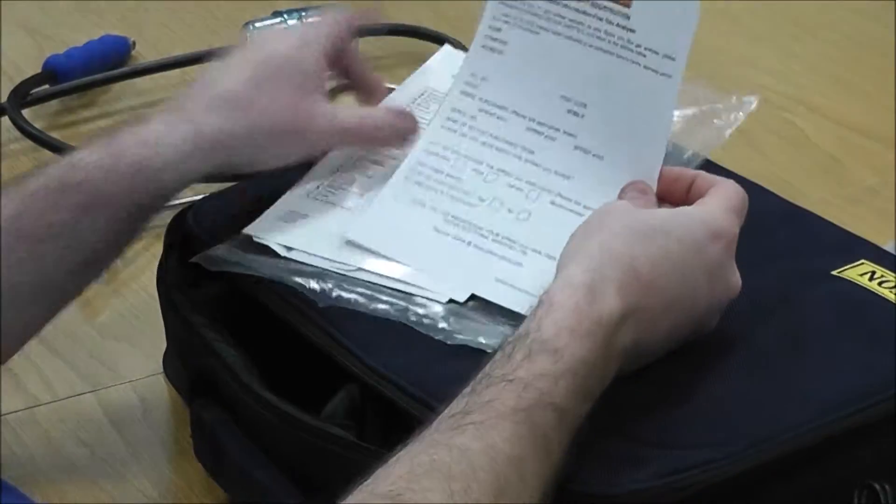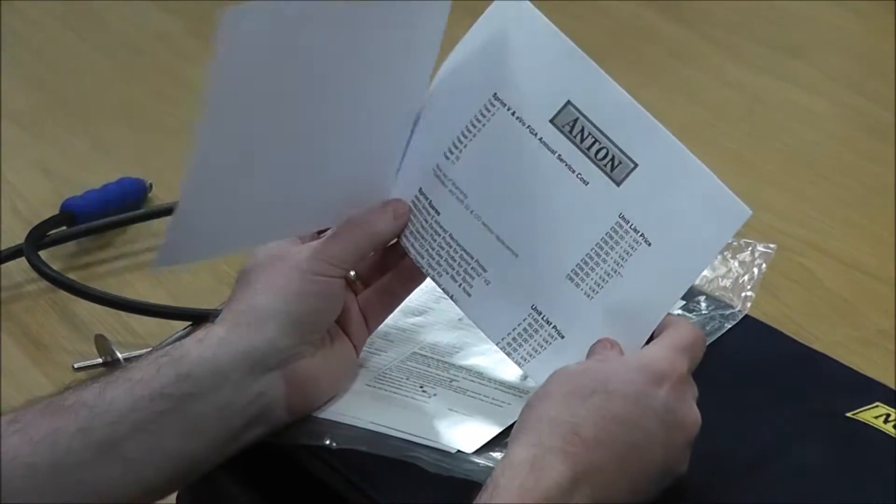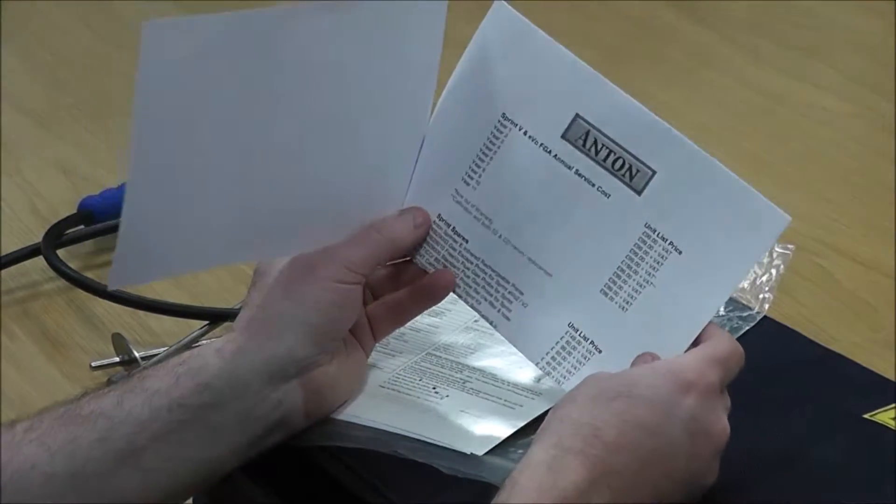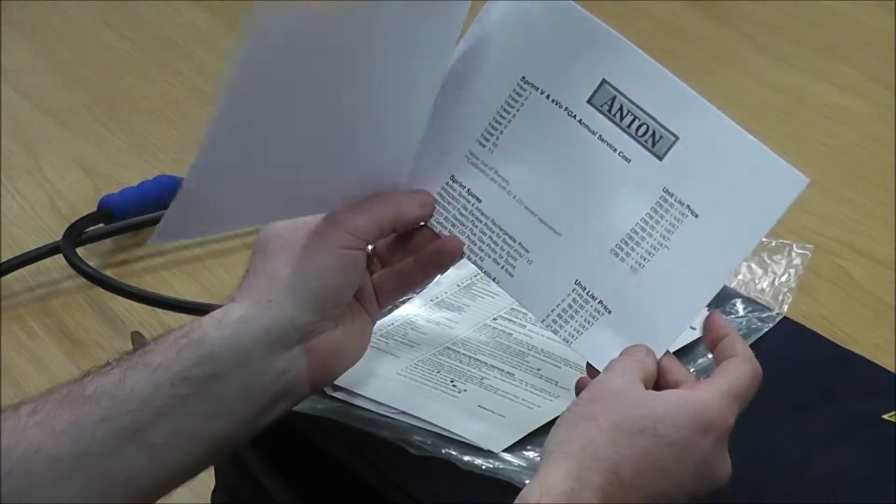And then in here we've got the warranty registration form that needs filling out. And then we've also got a price list here which tells you the ongoing cost for your analyzer and any spare parts and accessories you might need.